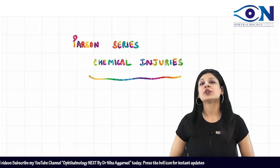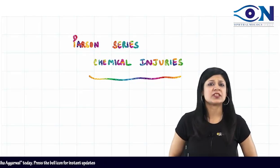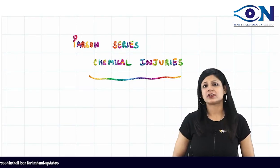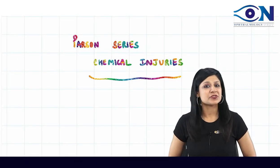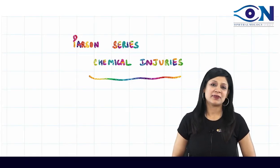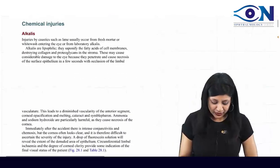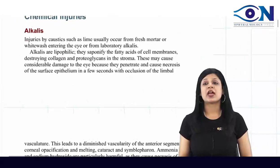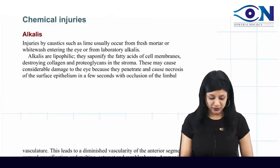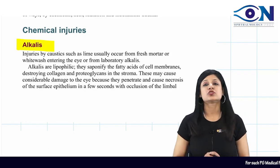Chemical injuries are an ophthalmic emergency and it is worthwhile to go through this topic. There are two kinds of chemical injuries: alkali injuries and acid injuries.